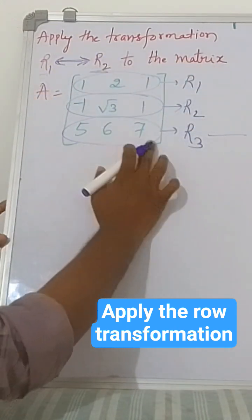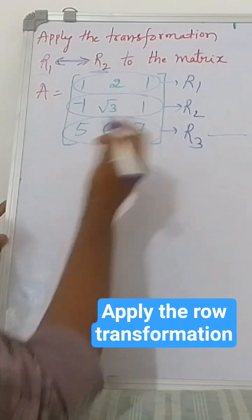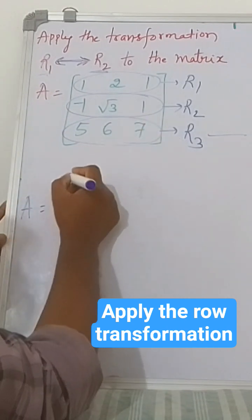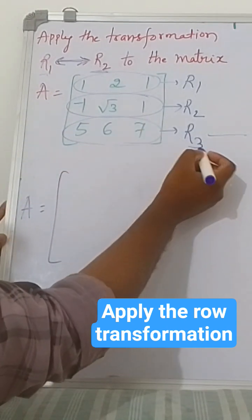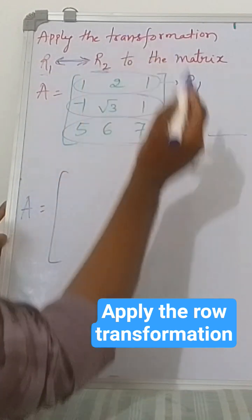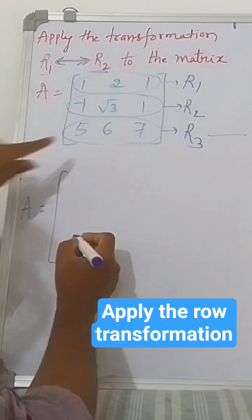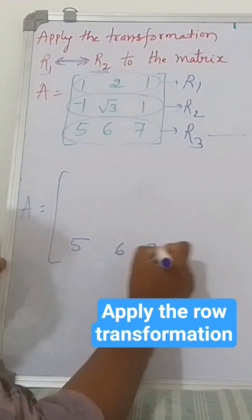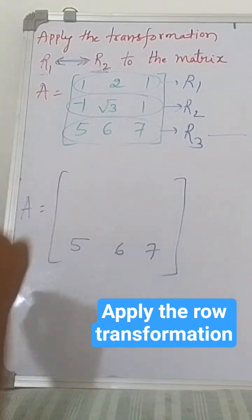So first I will write, r3 is not mentioned, so keep as it is. Five, six, seven, I am writing here.